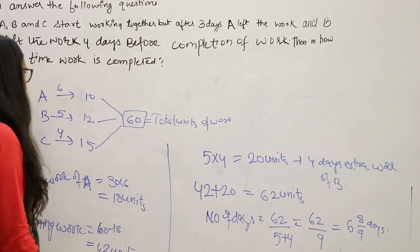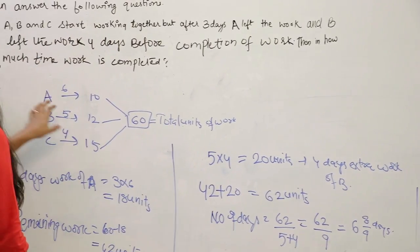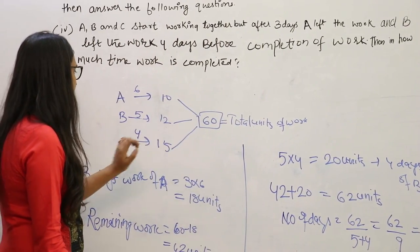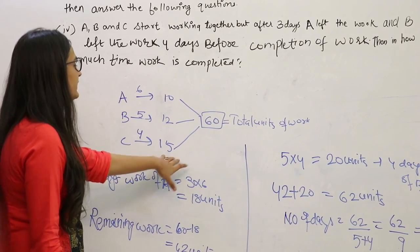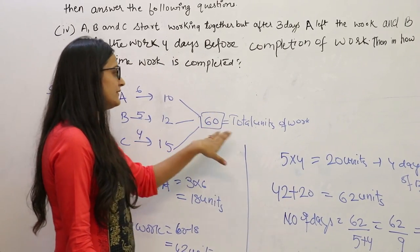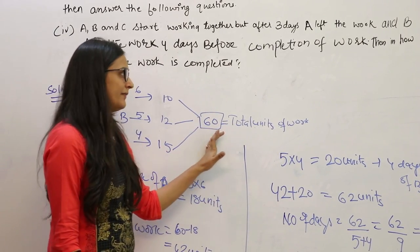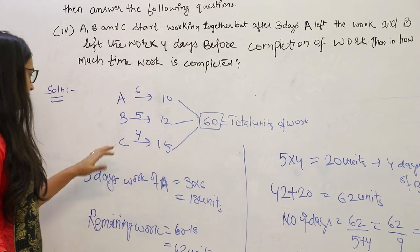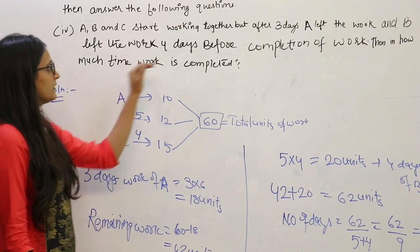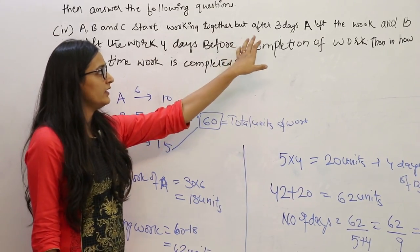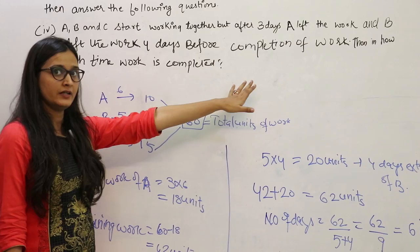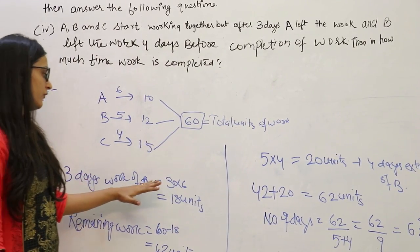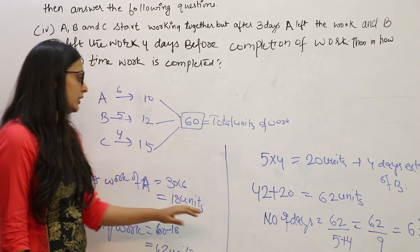I repeat the question. A can complete a work in 10 days, B can complete a work in 12 days, C can complete a work in 15 days. We take the LCM of these 3 numbers and find the efficiency of A, B and C. The question says A left the work after 3 days, so first of all we find the 3-day work of A. That comes out to be 18 units.